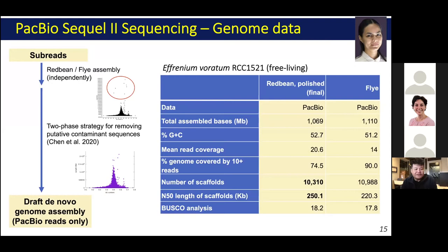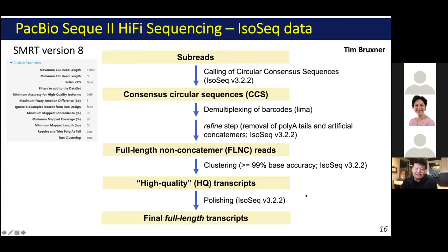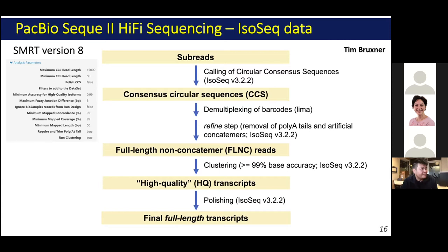In addition to support for this genome data, we also generated IsoSeq data using Sequel2 here at UQ. Tim Bruxner at UQ has been very helpful as we were trying to make sense of this data. He assisted us in running through the IsoSeq3 workflow. Generally, in the framework of SMRT Link version 8, the subreads were first used to generate consensus circular sequences — the CCS — which were then refined into full-length non-concatenated FLNC reads. Photo-clustering would then yield high-quality transcripts or HQ transcripts, and these HQ transcripts can be subjected to further polishing to yield the final transcripts. So: subreads to CCS, then to FLNC, then to HQ, then to the final.